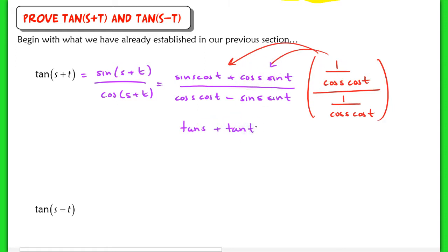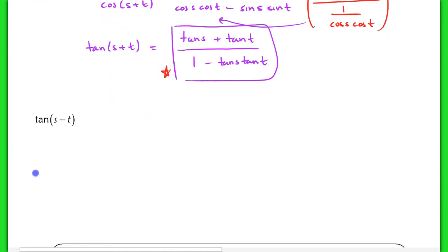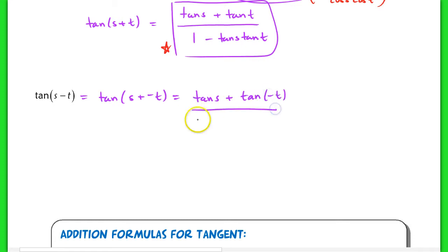We have the tangent of s for the first term, which is just tangent of s. In the second term, multiplying out, I end up with tangent of t because cosine of s over cosine of s cancels to 1. So that's the numerator. In the denominator, distributing gives 1 minus sine of s times sine of t over cosine s cosine t, which is tangent s times tangent t. So the tangent of s plus t equals tangent of s plus tangent of t over 1 minus tangent s times tangent t.